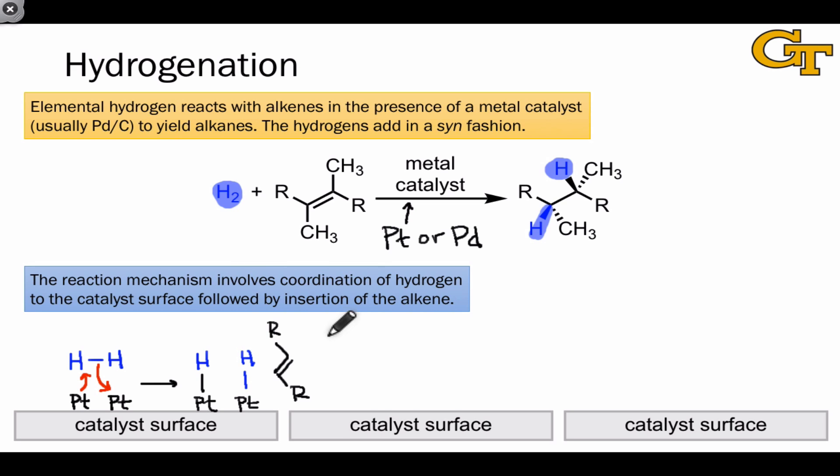It's at this point that the alkene enters the picture. Through analogous electron flow, one of the Pt-H bonds donates its electron pair to one of the carbons of the alkene, and the alkene donates an electron pair back to the metal center.